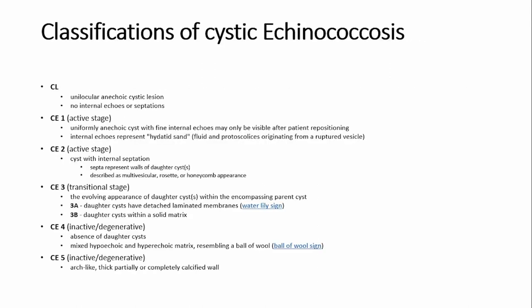There are variable classifications of cystic echinococcus. The major classifications are as follows: We have CL, which is a unilocular anechoic cystic lesion with no internal echoes or septations. We also have CE1, which is called the active stage — a uniform anechoic cyst with fine internal echoes that may only be visible after patient repositioning.